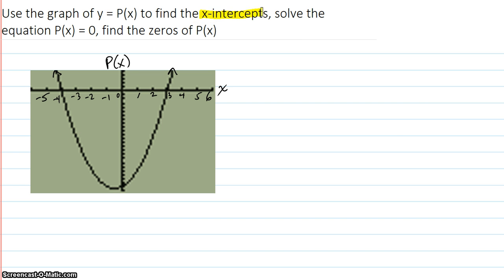Well, it turns out the x-intercepts, and solving this equation, and finding the zero of p of x really all mean the same thing. So, let's first find the x-intercepts.